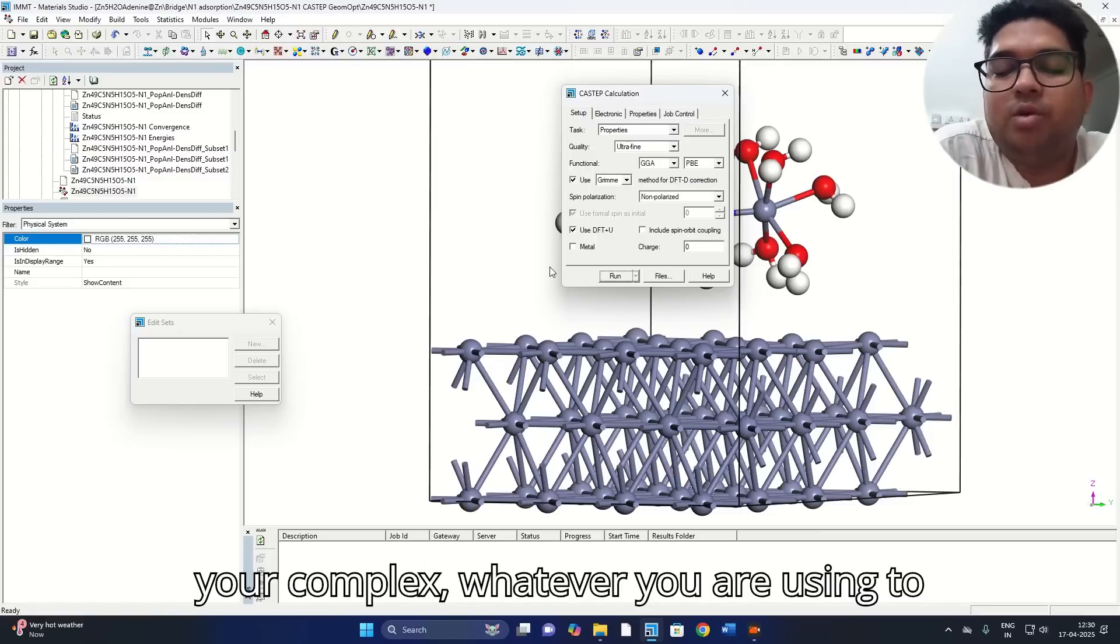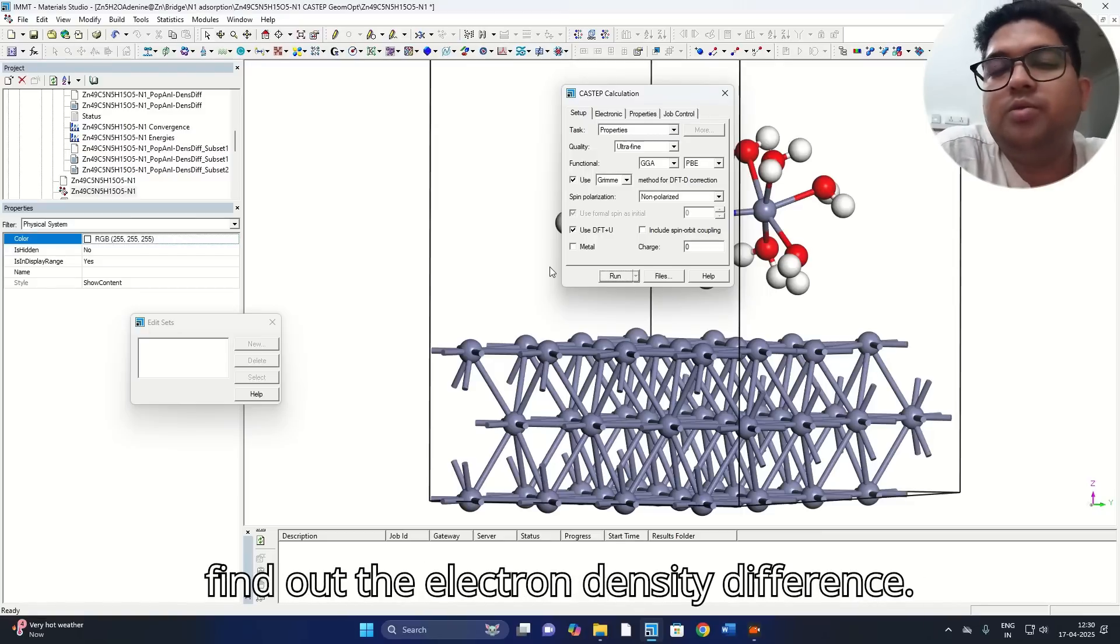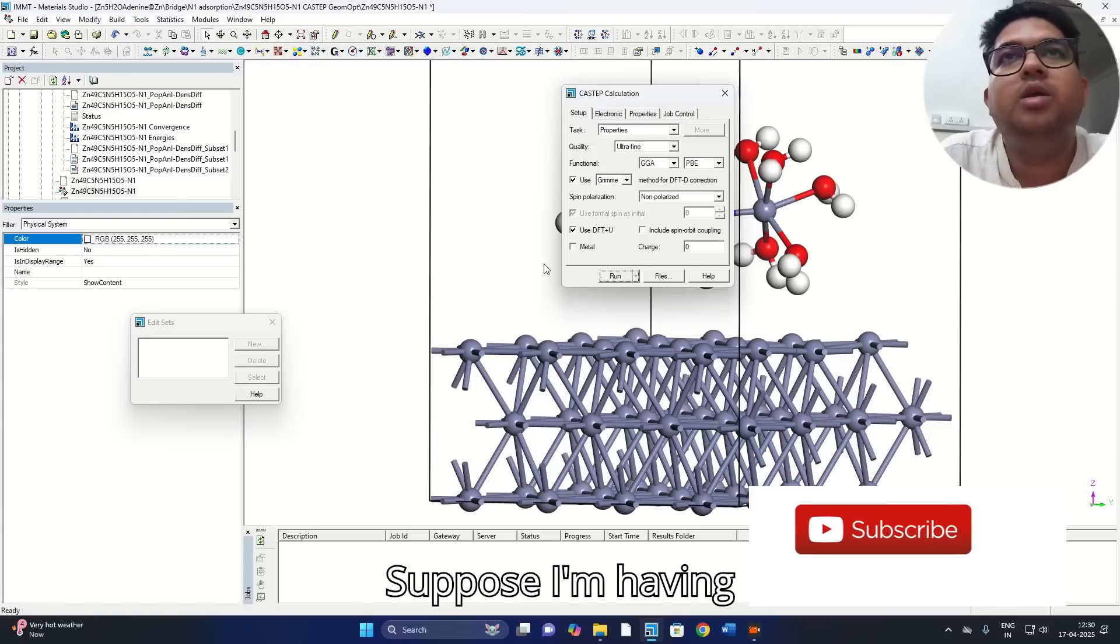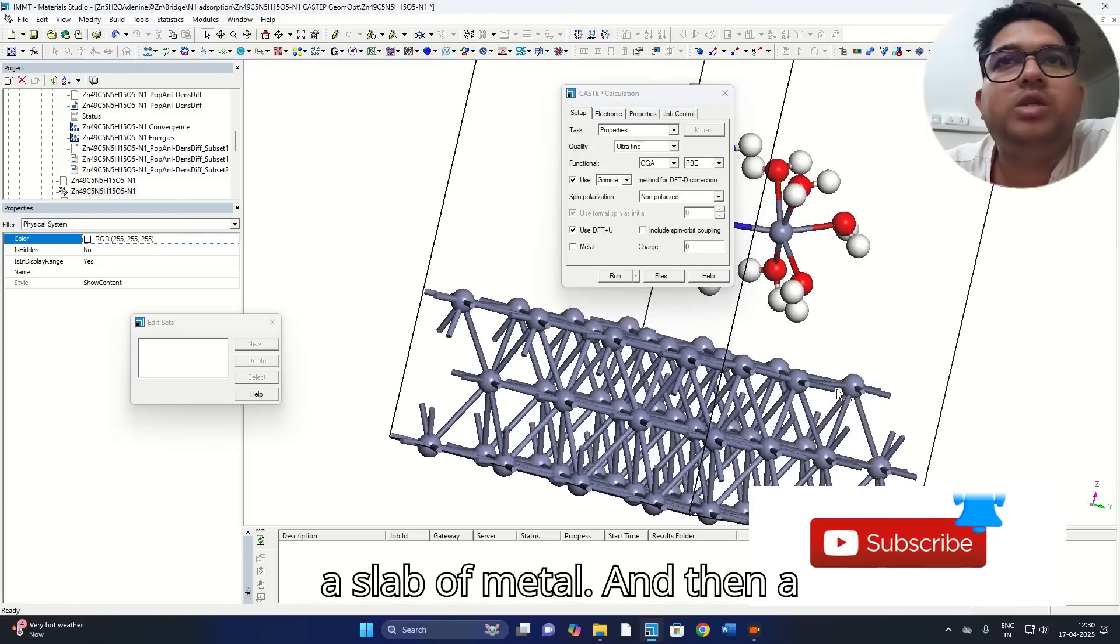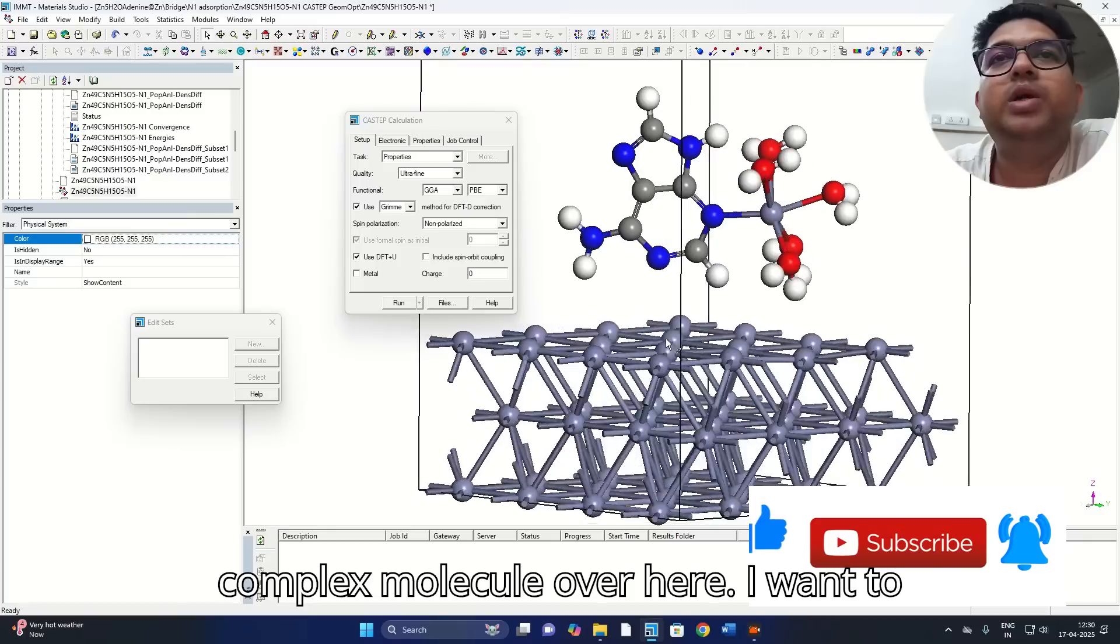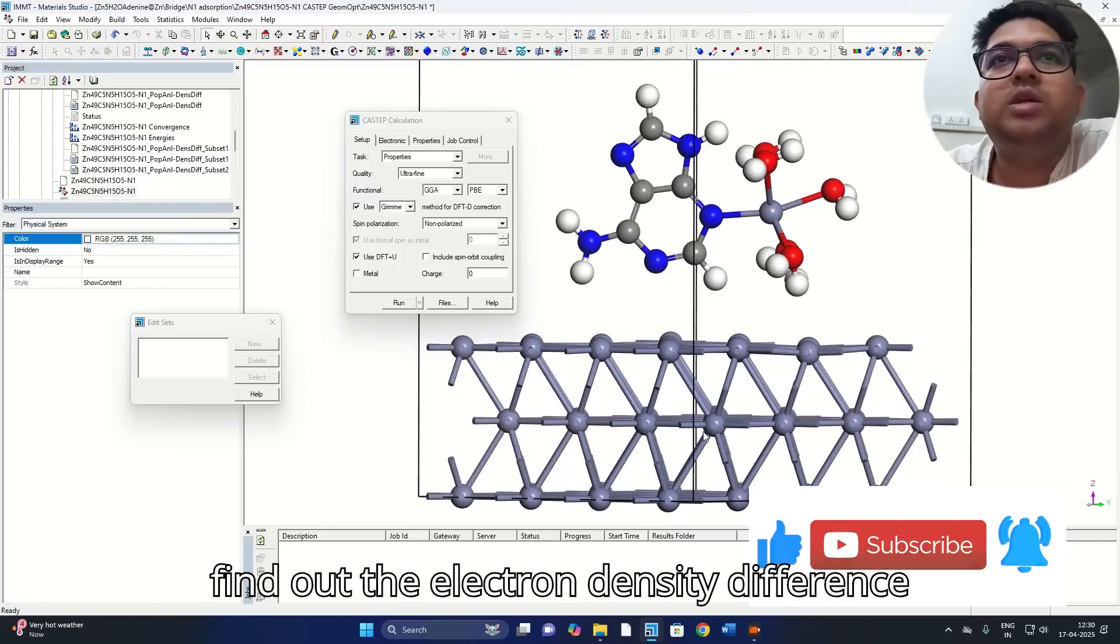Whatever you are using to find out the electron density difference, suppose I'm having a slab of metal and then a complex molecule over here, I want to find out the electron density difference between these two.